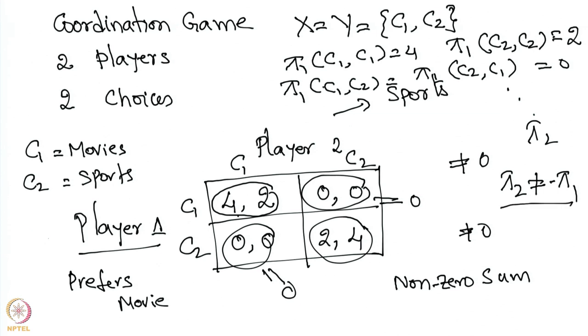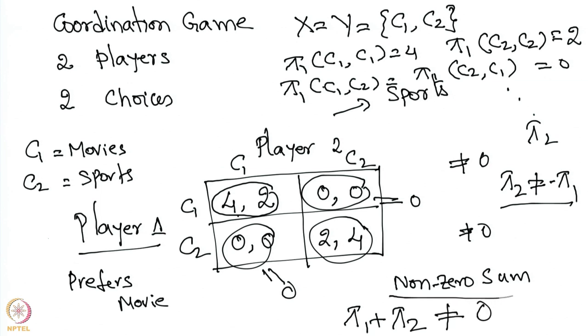Likewise we can write down the other things. In this example, π₂ equals minus π₁. In the coordination game example, there are two choices: X equals Y equals {C₁, C₂}, and π₁(C₁, C₁) equals 4, π₁(C₂, C₂) equals 2, and π₁(C₁, C₂) equals π₁(C₂, C₁) equals 0. Here π₂ is certainly not equal to minus π₁, which means π₁ plus π₂ is not equal to 0 — this is the reason why it is called a non-zero-sum game.